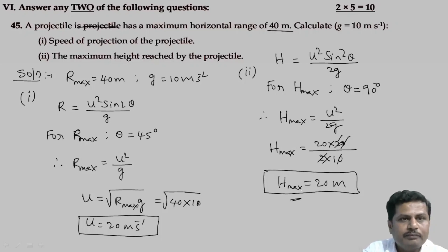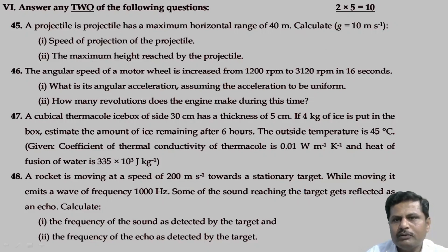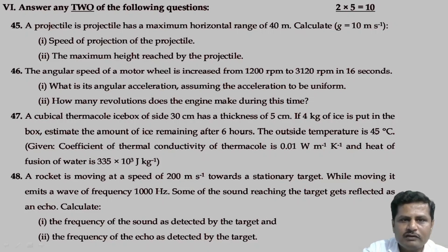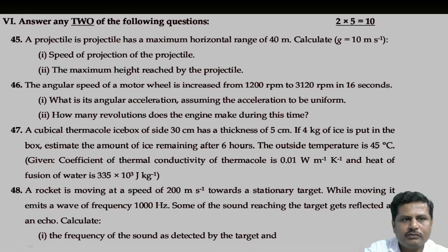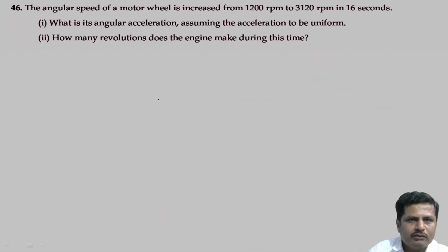The next problem: The angular speed of a motor wheel is increased from 1200 rpm to 3120 rpm in 16 seconds. What is the angular acceleration, assuming the acceleration to be uniform? How many revolutions does the engine make during this time?